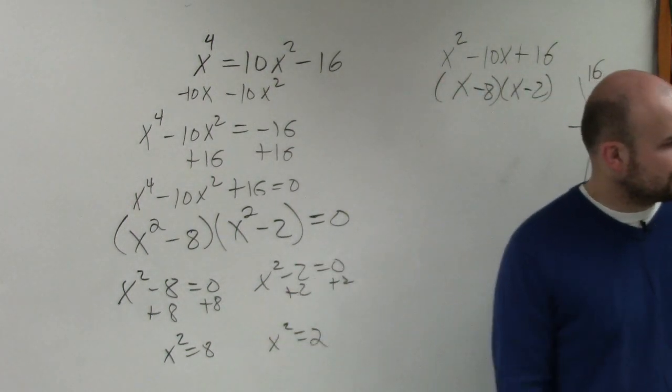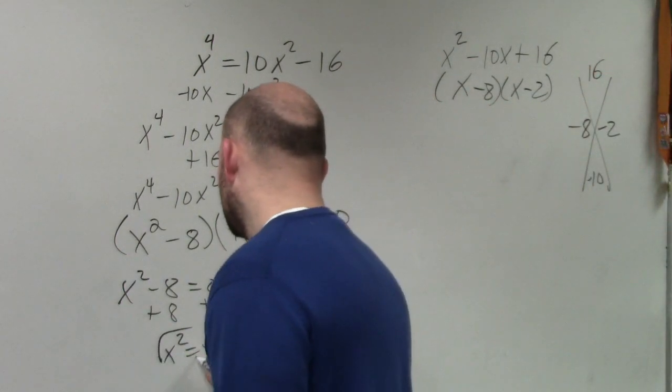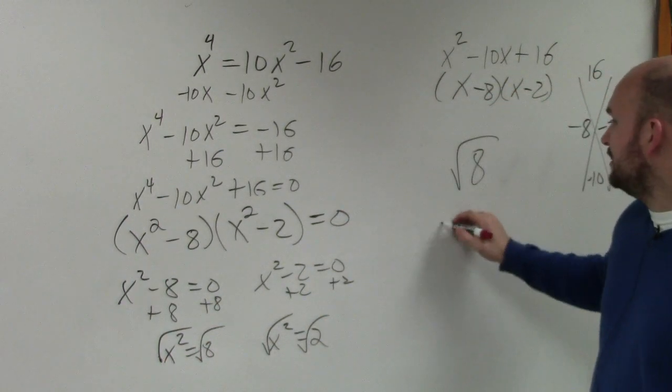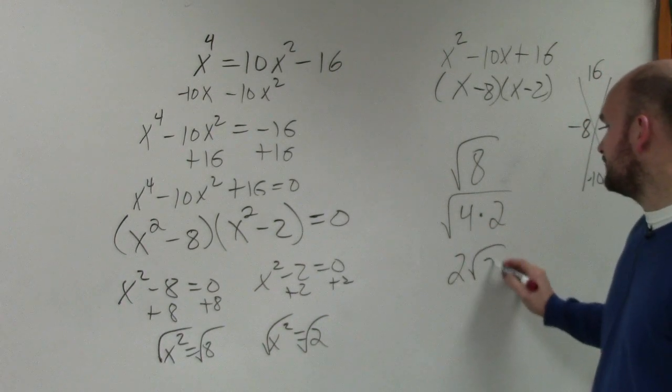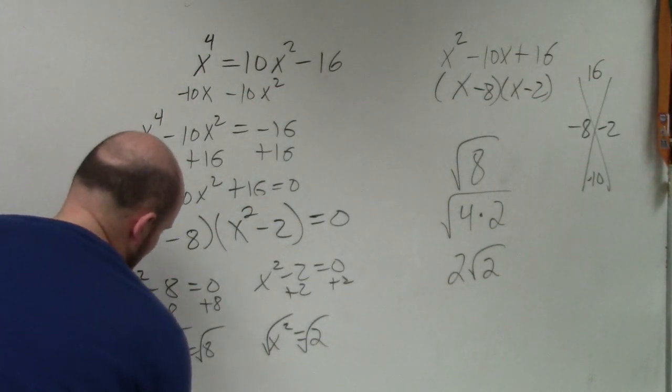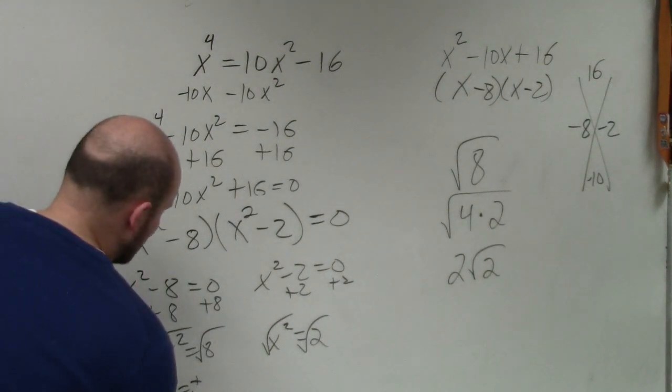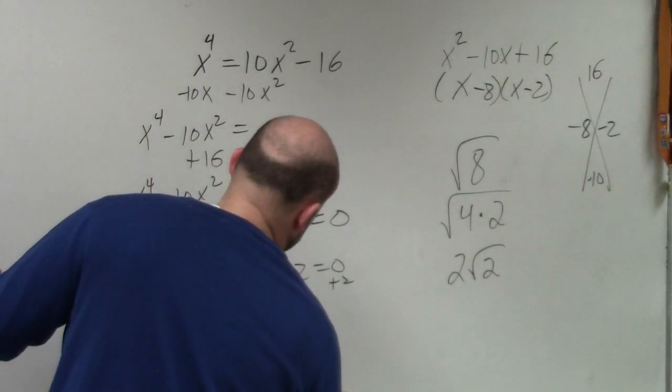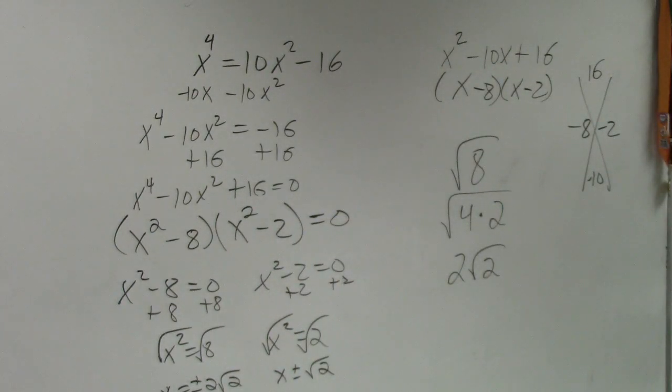To solve, we need to undo the square by taking the square root. The square root of 8 can be simplified into √(4×2), and the square root of 4 we can rewrite as 2√2. Remember, whenever you introduce the square root, that's plus or minus. So that's ±2√2, and x = ±√2. Make sure you include plus or minus and simplify your radicals if possible.